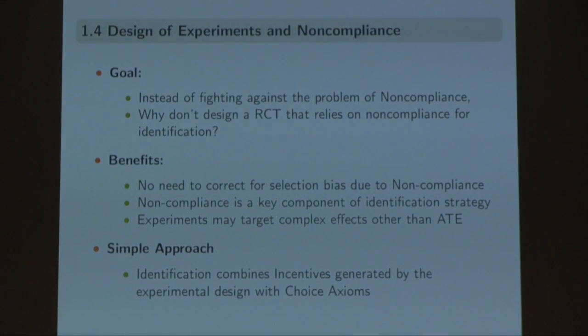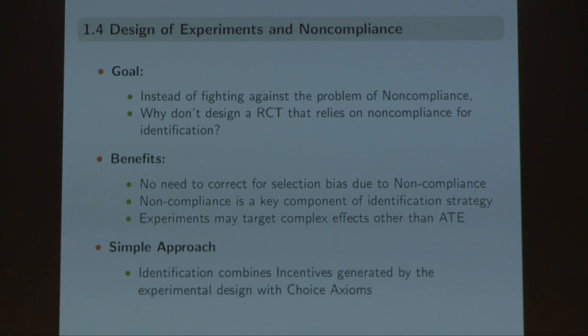The goal, instead of fighting against non-compliance, is to use a framework that combines both the incentives given by the design and choice axioms to generate a framework allowing me to compute causal parameters by combining these two approaches. As Professor Ditton said, when you have non-compliance, you do not have a pure randomization — you have an IV. We are going to see the common LATE, local average treatment effect, just to explain some notation I'll use.